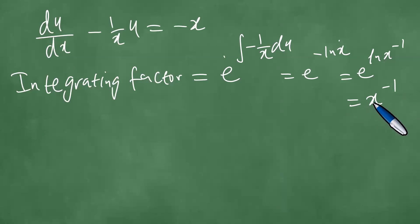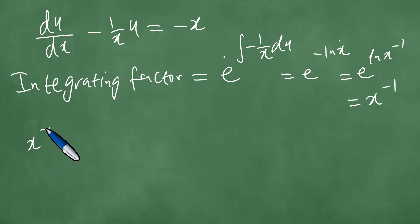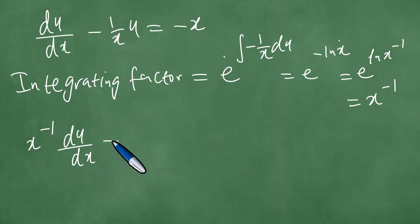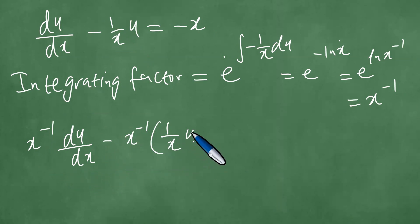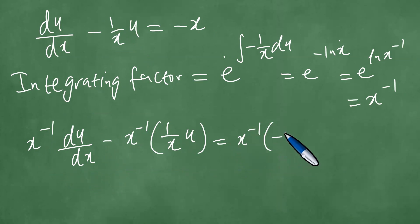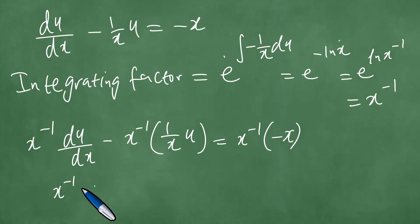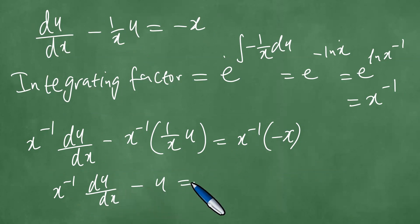We take x to the power minus 1 and multiply both sides. We get x to the power minus 1 times du/dx, minus 1 over x squared times u, which equals minus 1. Multiplying each term by x to the minus 1: x to the minus 1 du/dx minus x to the minus 2 times u equals minus 1.